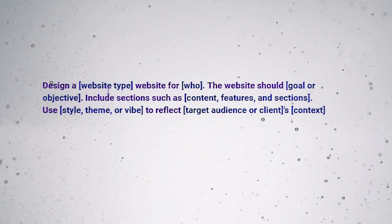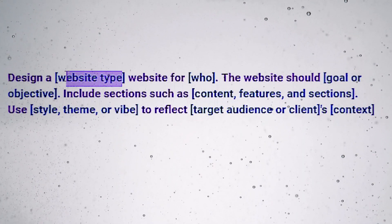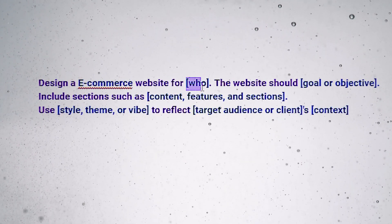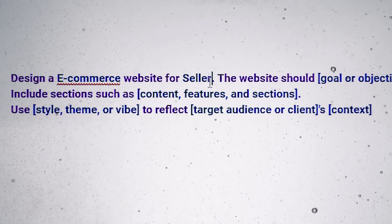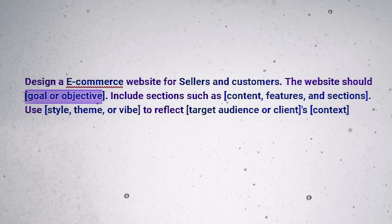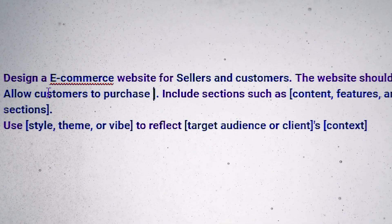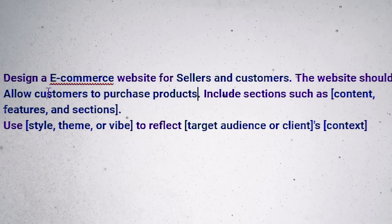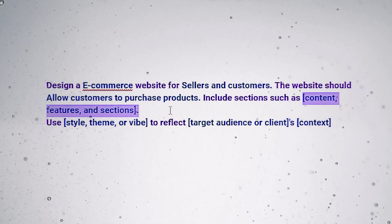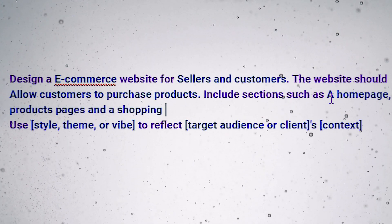You can copy the template from the description. You just have to fill in the brackets and you're done. In the website type, you'll tell what type of website you want to create — for example, you might write 'e-commerce' if you want to create an online store. For target audience, you might write 'a fashion brand' if creating a website for a clothing company, or 'a retired couple' if creating a travel blog for an older demographic. The goal or objective is the primary purpose of your website — for example, 'allow customers to browse and purchase products' for an e-commerce site, or 'share their travel experiences' for a travel blog. In content features and sections, you'll give a description of the content, features, and sections your website should include — for example, a homepage, product pages, and a shopping cart for an e-commerce website.